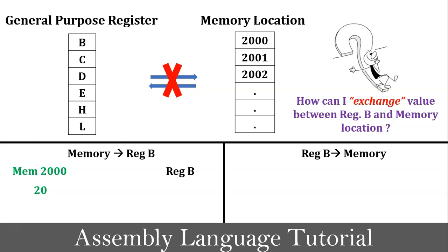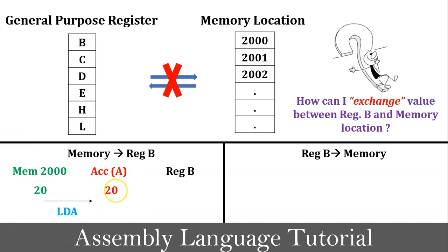Since no direct instruction is available in the 8085 microprocessor, I must use the LDA instruction. Using LDA, I can load value 20 into the accumulator from memory location 2000. Now the content of the accumulator is 20. Then I will use the MOV instruction to copy data from the accumulator to register B. So finally, value 20 is loaded into register B from memory location 2000. If you want to learn about the MOV instruction, click on the above I button.